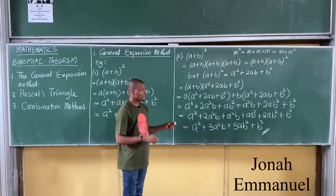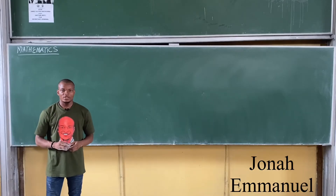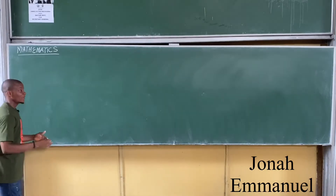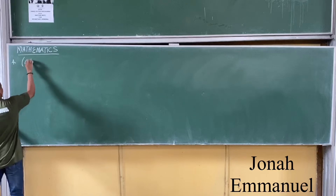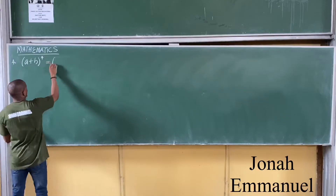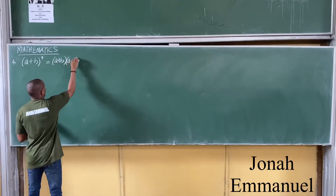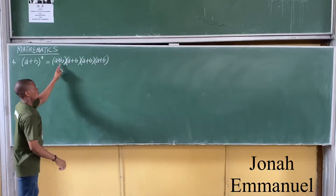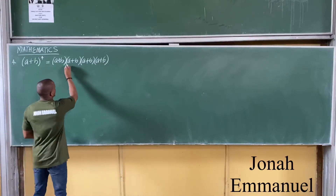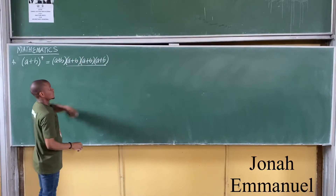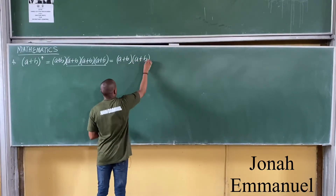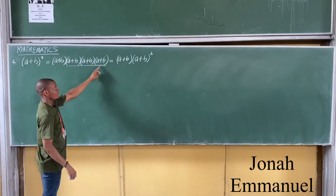Let's look at one last problem using the general expansion method. Let's expand (a + b) to the power 4. This equals (a + b) multiplied by itself four times, which we can express as (a + b) multiplied by (a + b) cubed. From our previous example, (a + b) cubed equals a cubed plus 3a squared b plus 3ab squared plus b cubed.